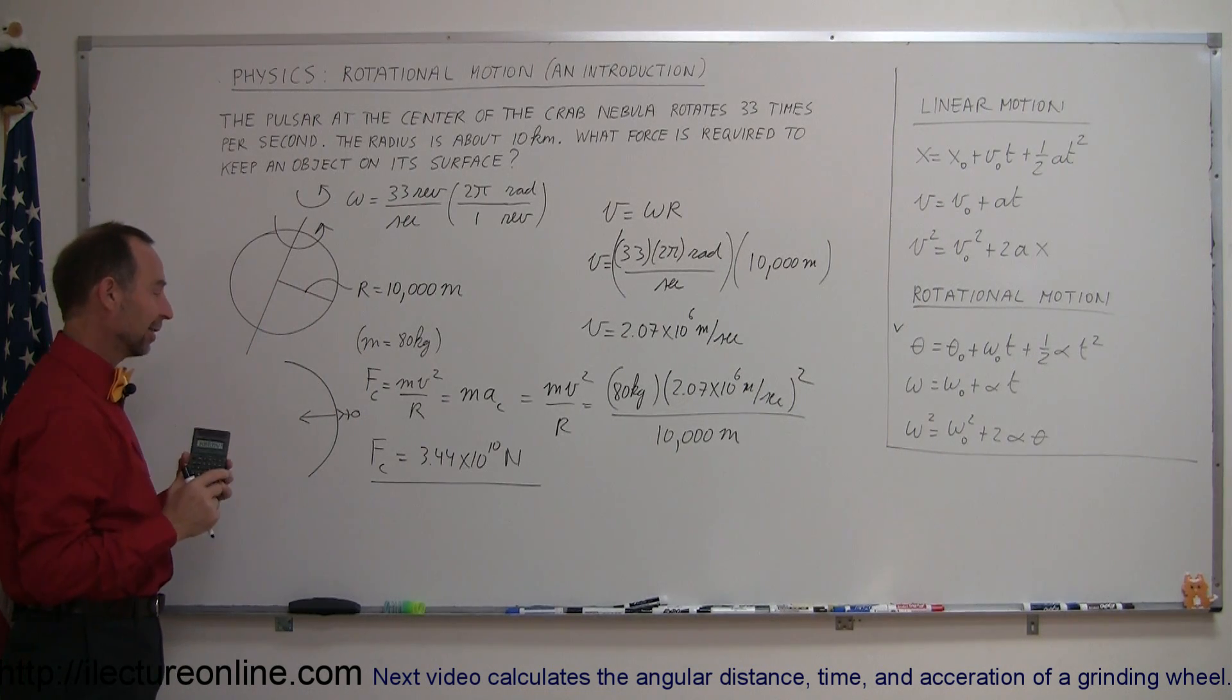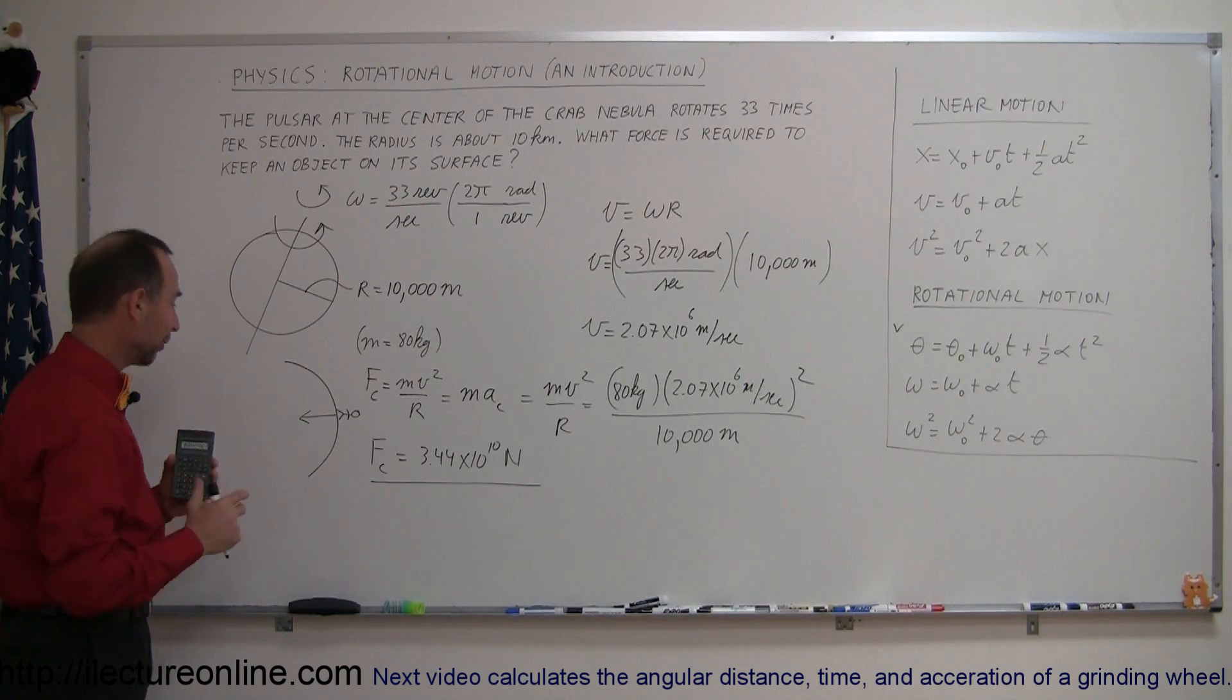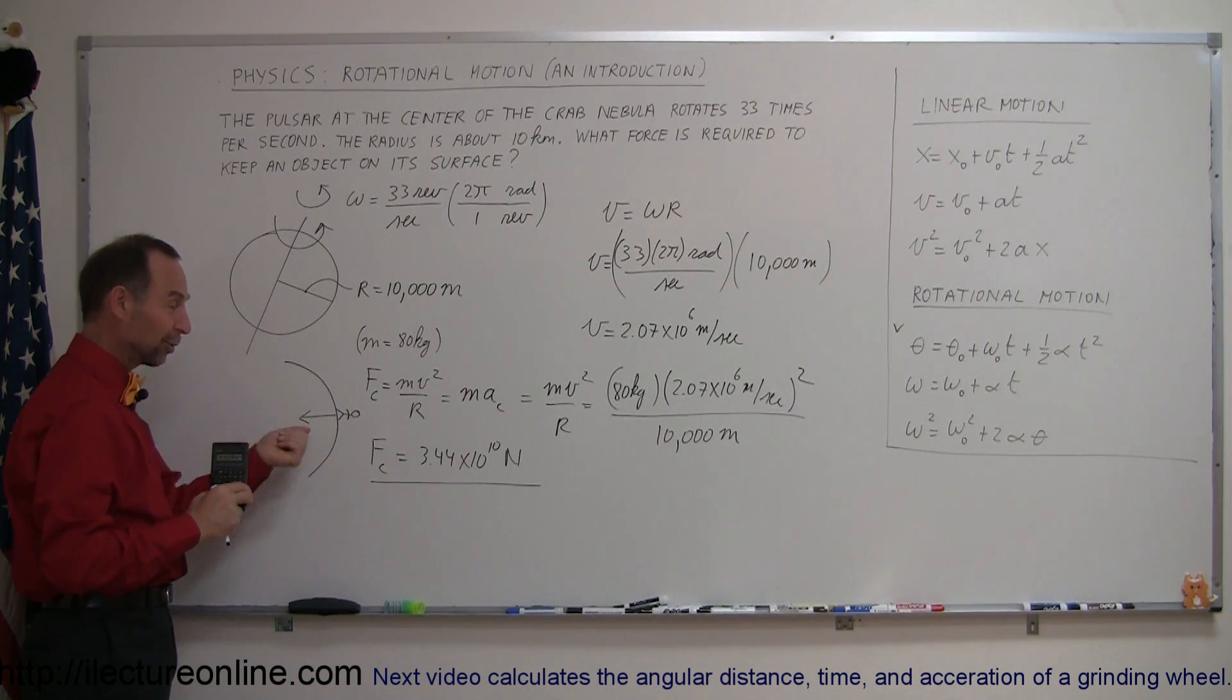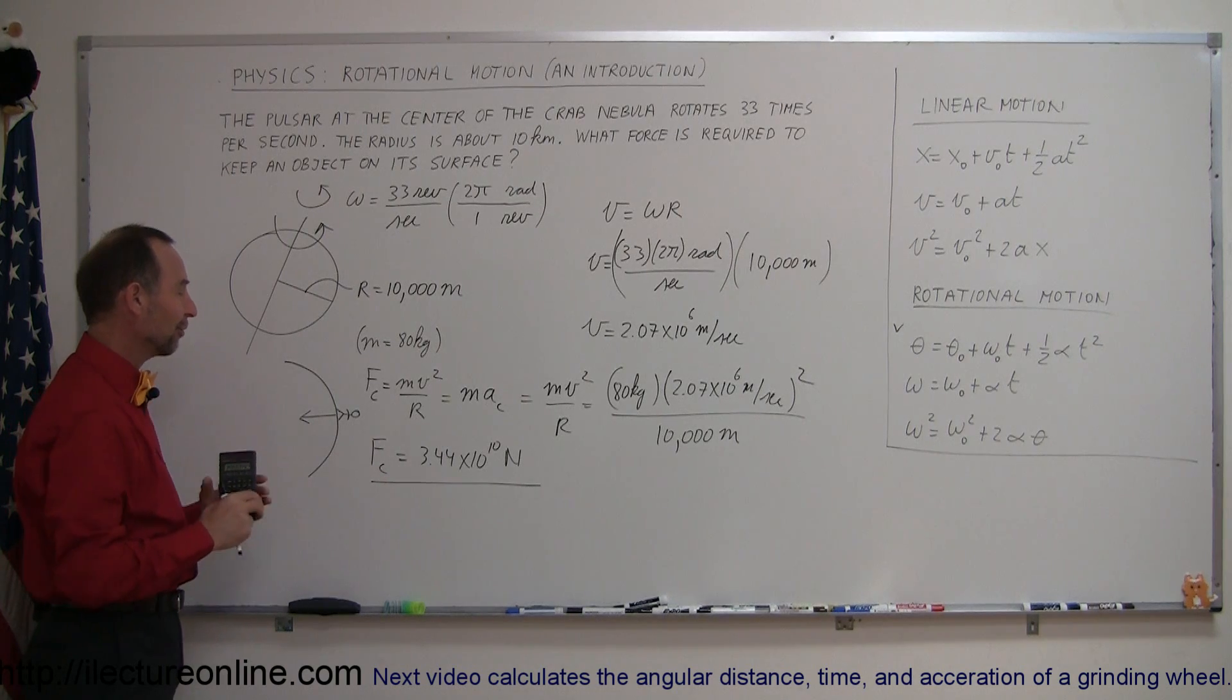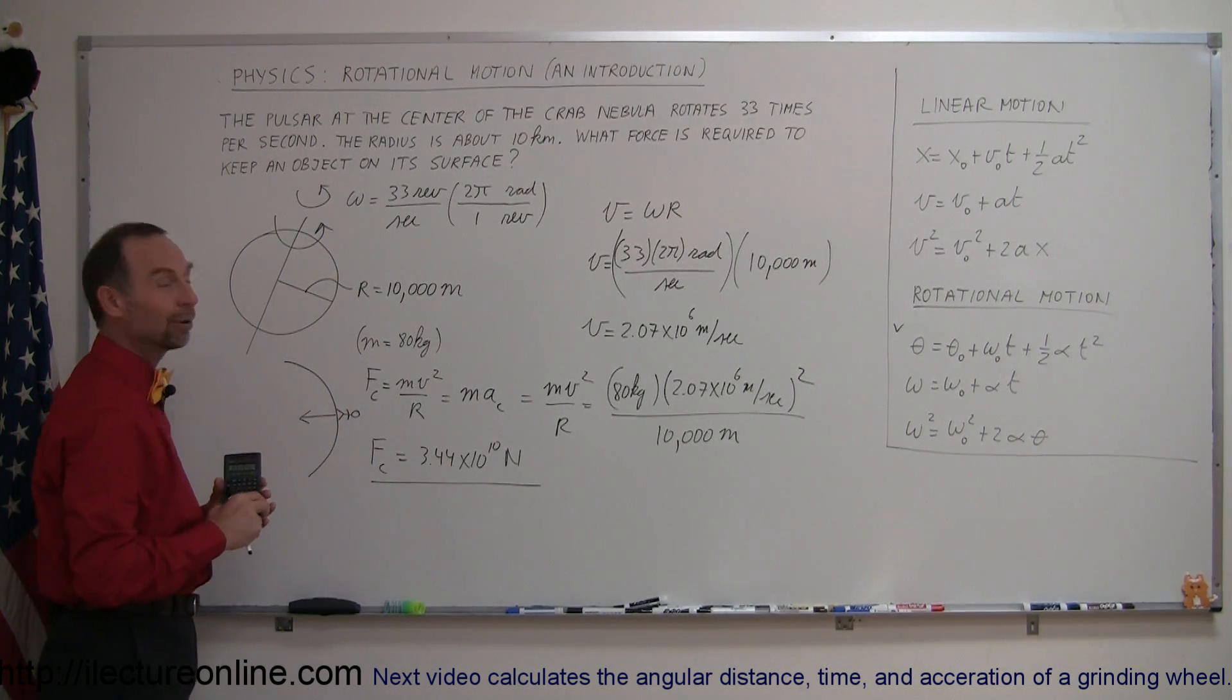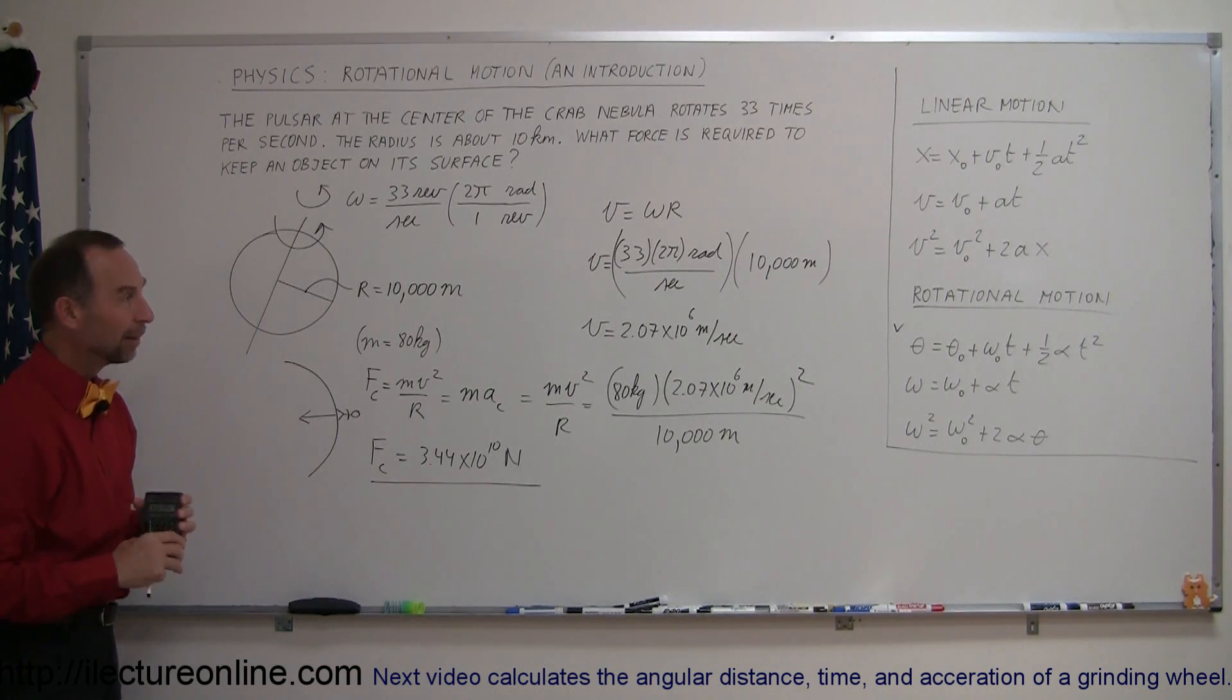Now it turns out, luckily, well luckily I don't know, I don't think you ever should try to land on a neutron star. There's enough gravitational force to keep you on, even though you're traveling so fast that the centripetal force required to keep you on the planet is 34 billion Newtons.